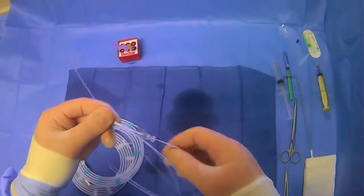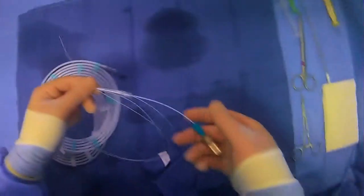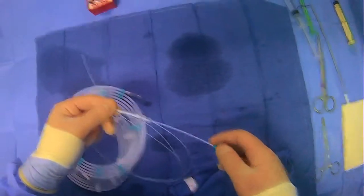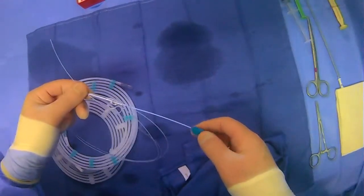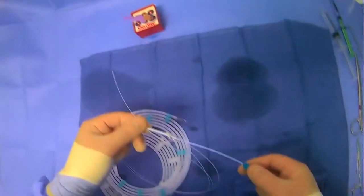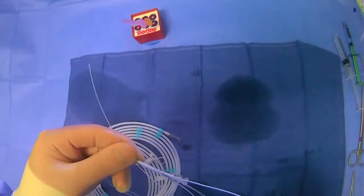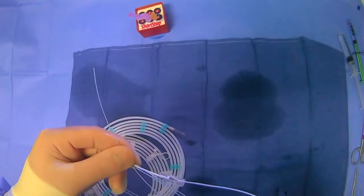All right, and now, we won't ever be really using it like this, but just to show you what movements you'll do, you'll pull, you'll keep this cheater in place and you'll pull the back end here to pull the loop into the microcatheter and then you'll push it in.